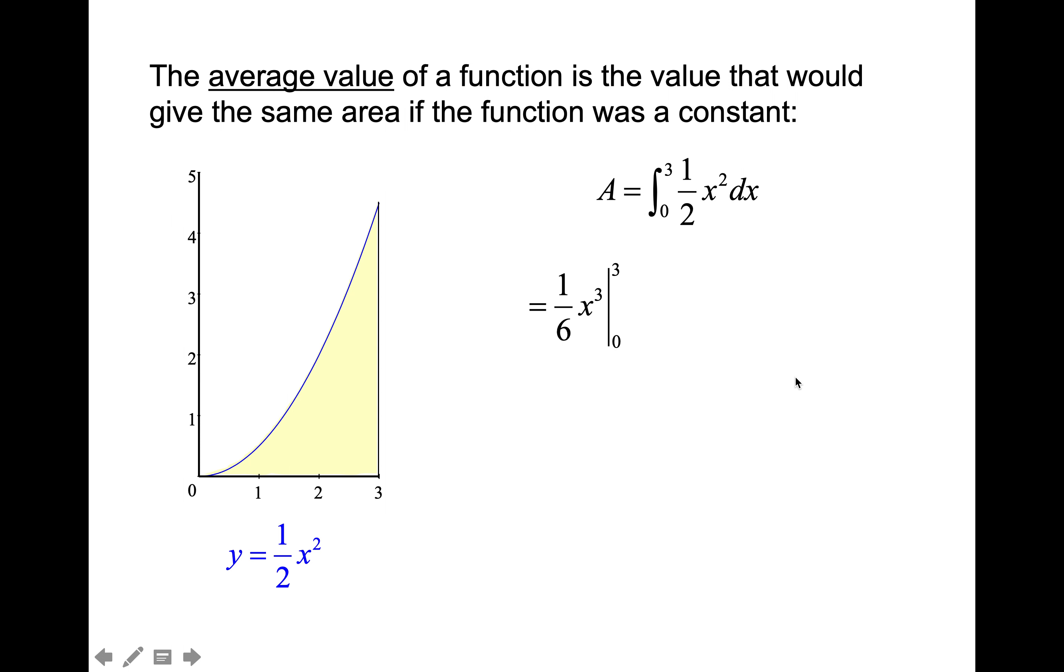then we're going to take the antiderivative, remember we increase the power by one and divide by that new power, so we would get one-sixth x cubed. And we're going to plug in a three, plug in a zero, and you get twenty-seven over six, or nine-halves, or 4.5.